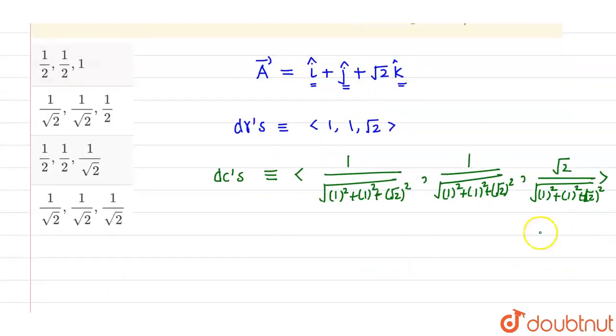And if you simplify this, the dc's or direction cosines comes out to be 1 divided by, this will be 1 plus 1 plus 2 which is 4 and root 4 is nothing but 2. So 1 by 2, 1 by 2 and root 2 by 2 can be written as 1 by root 2. So these will be the direction cosines: 1 by 2, 1 by 2, 1 by root 2.